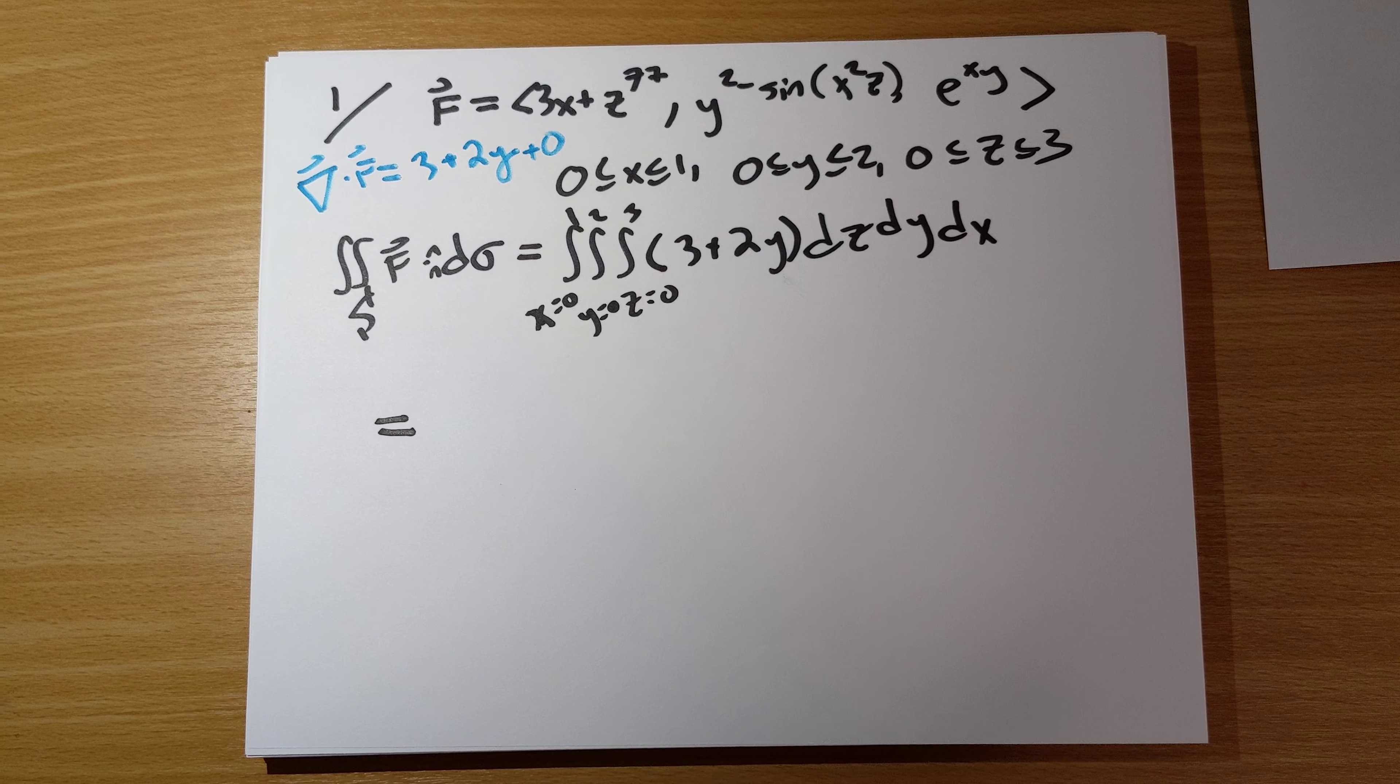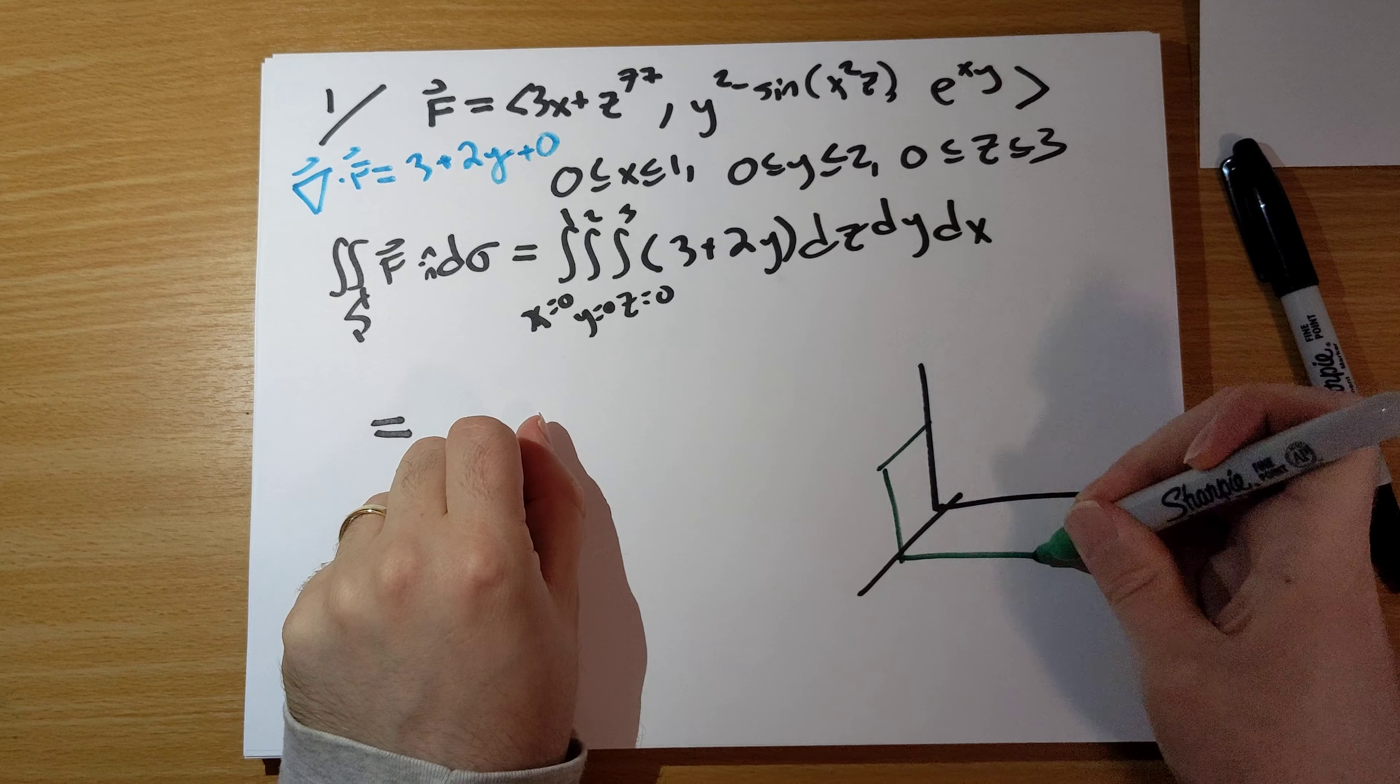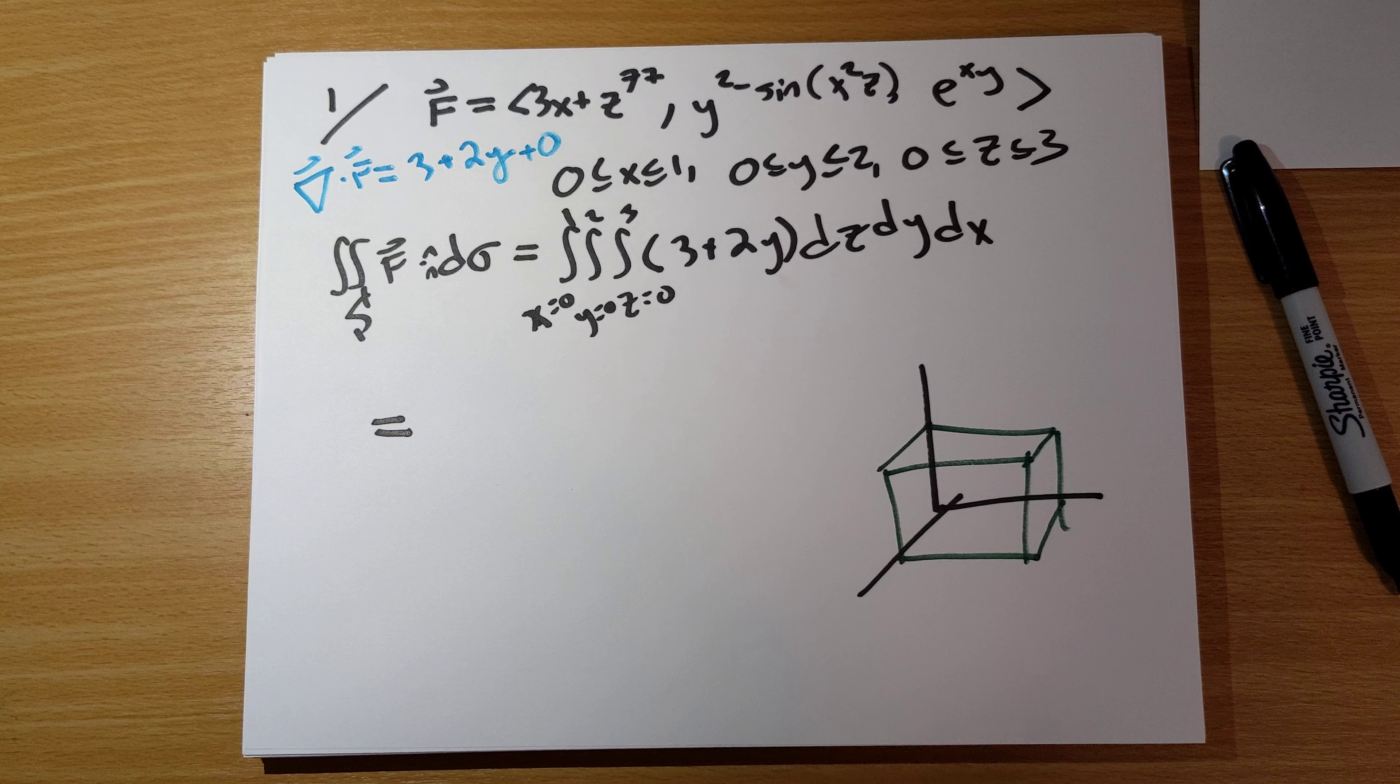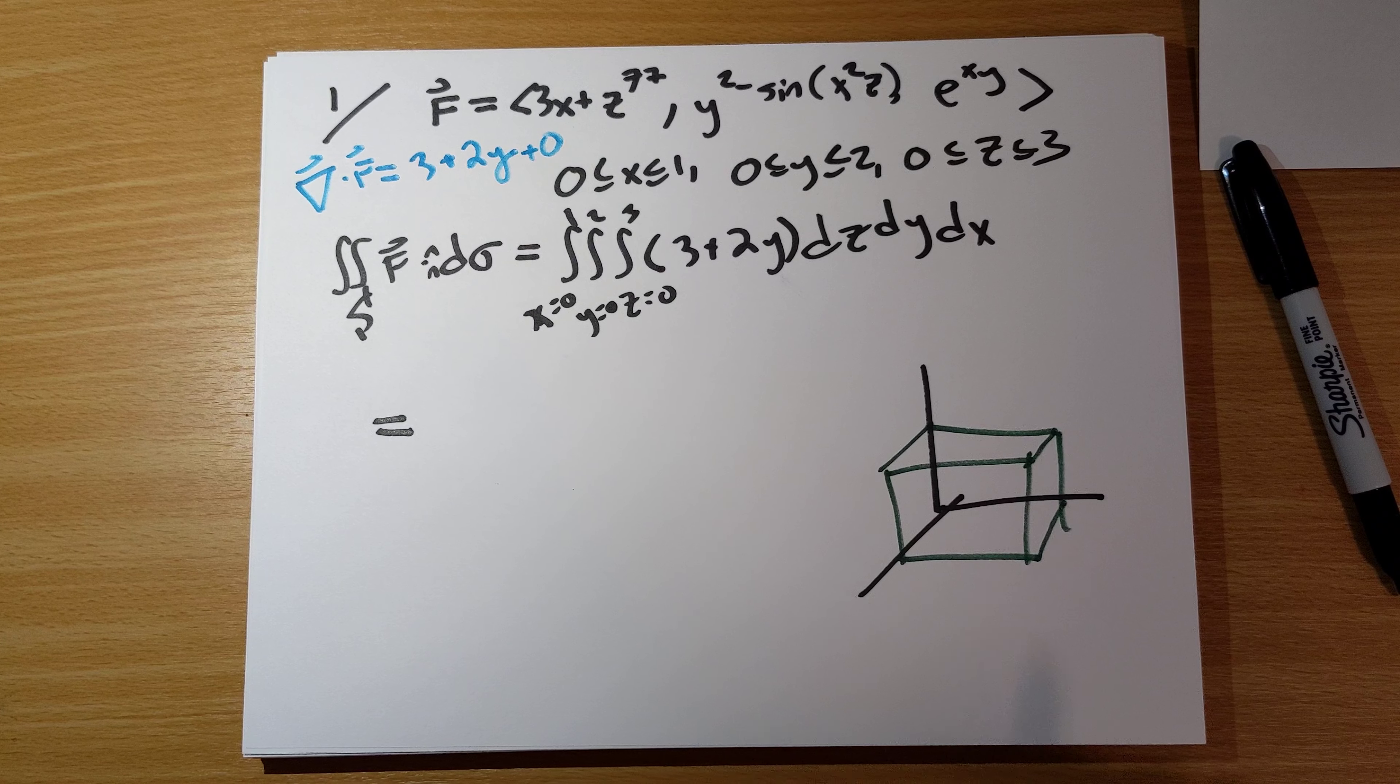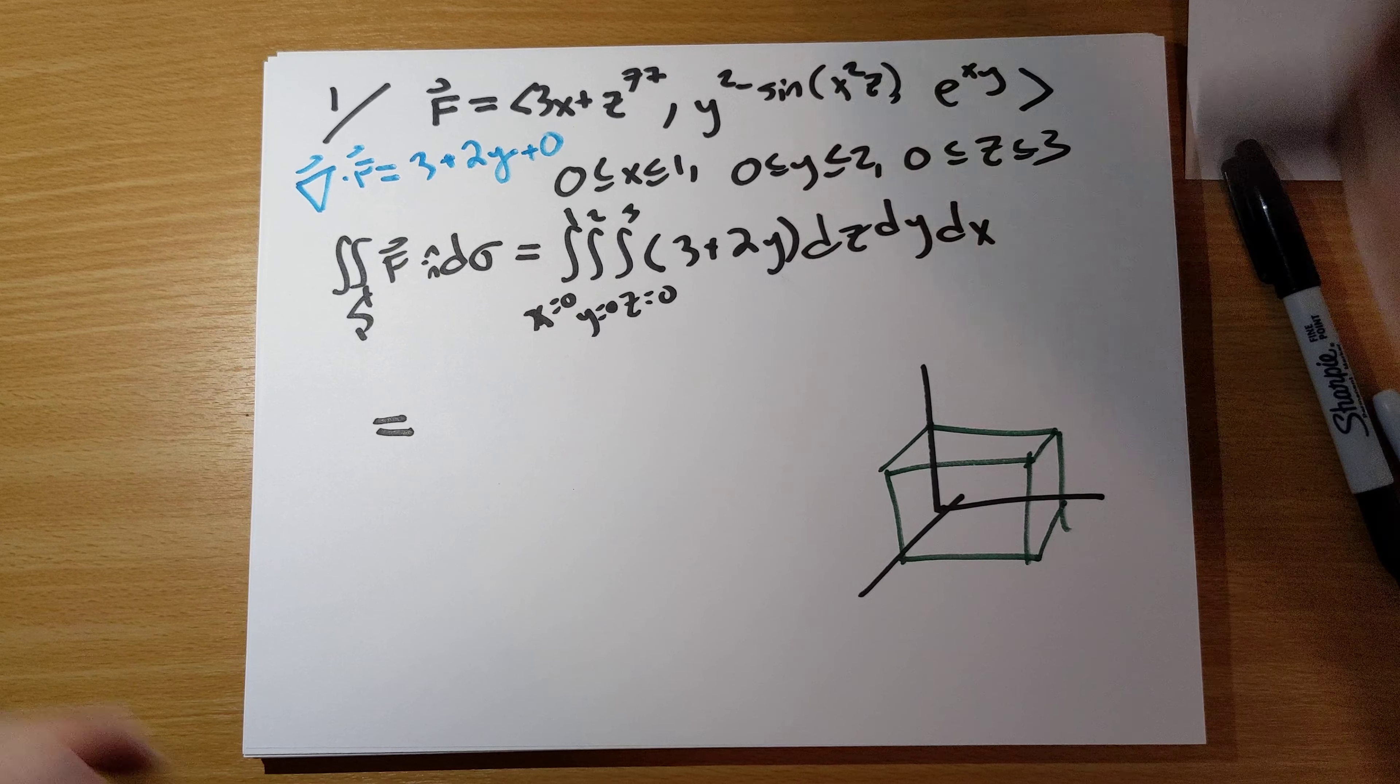This transforms what would be, let me just draw the picture here. This really feels like it should be six separate vector surface integrals because we need to evaluate the flux of f through each of the six sides of the box here. And then we trade that in for one extremely straightforward triple integral.